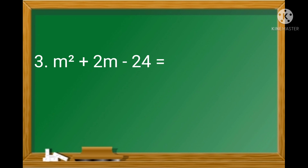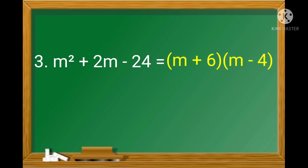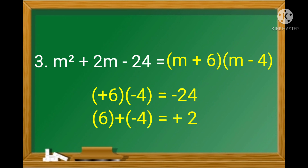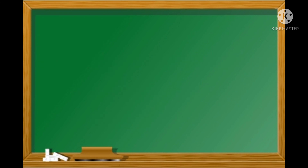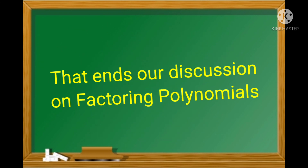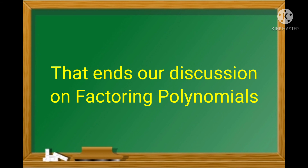For Number 3, m² + 2m − 24: the factors are (m + 6)(m − 4). Because 6 × (−4) = −24, which is our last term, and 6 + (−4) = +2, which is our middle term. That ends our discussion on factoring polynomials.